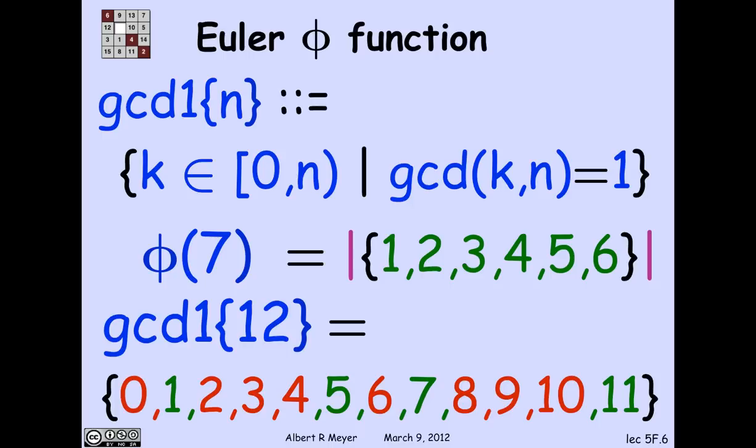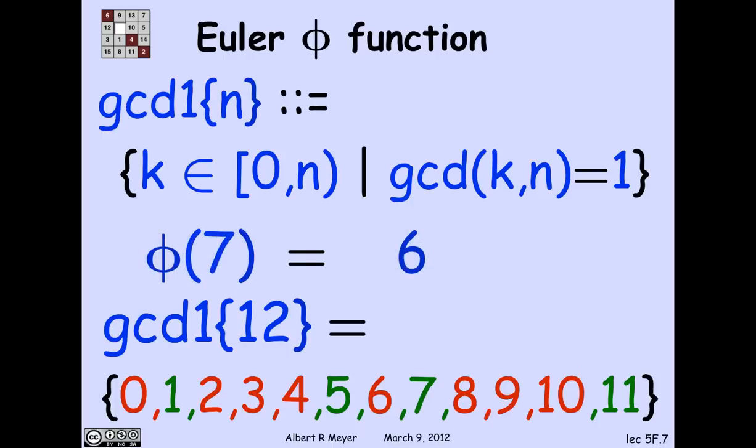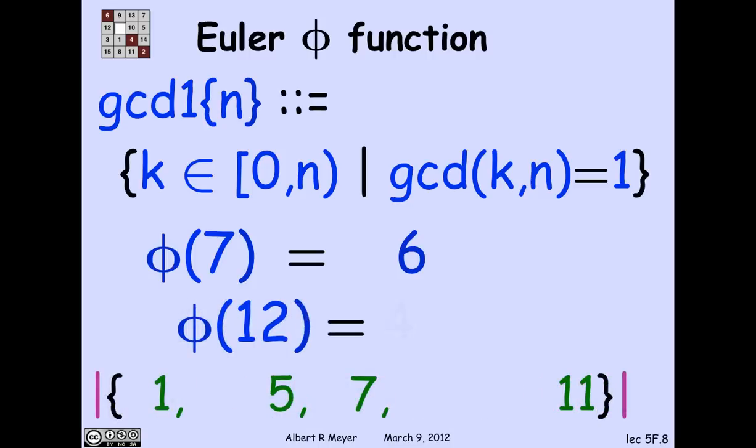Anyway, phi of 7 is the size of GCD1 of 7, namely the size of the set 1 through 6, which is 6. GCD1 of 12 determines phi of 12. Phi of 12 is the number of green elements, which is 4.